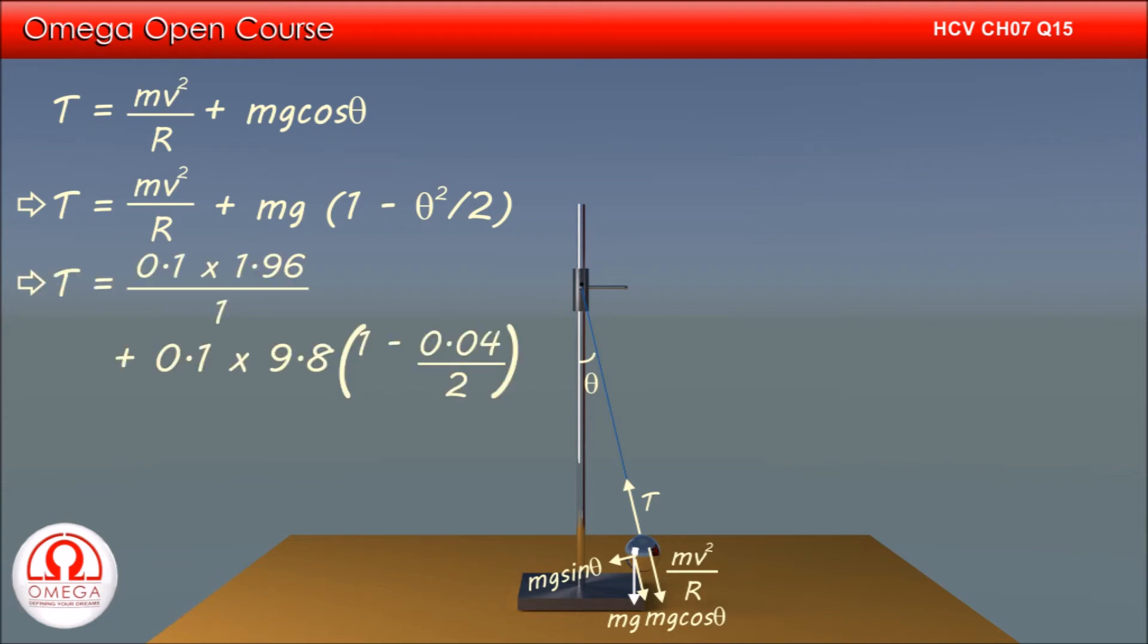Putting the values, we get T is equal to 0.1 into 1.96 divided by 1 plus 0.1 into 9.8 into 1 minus 0.04 by 2.